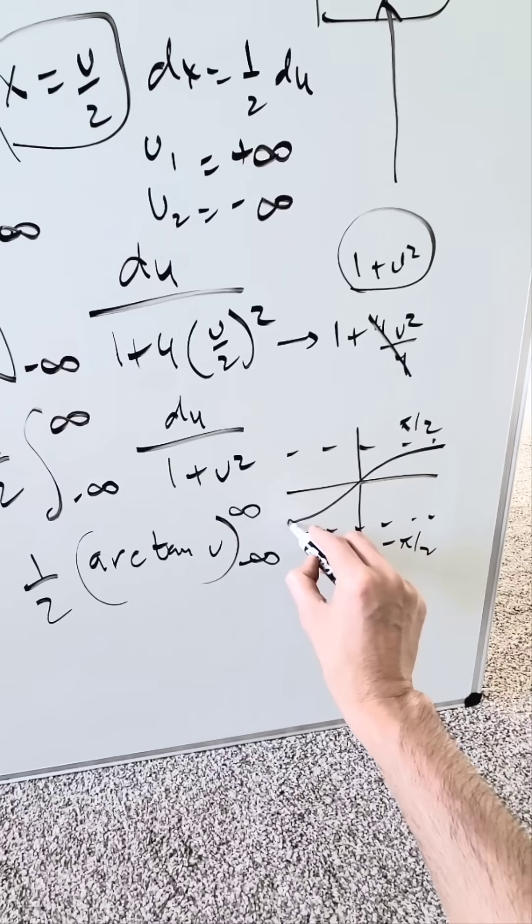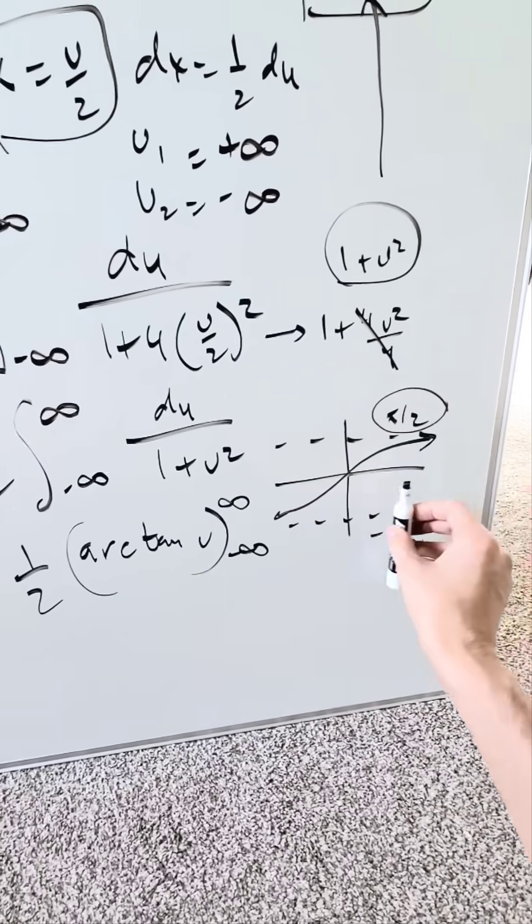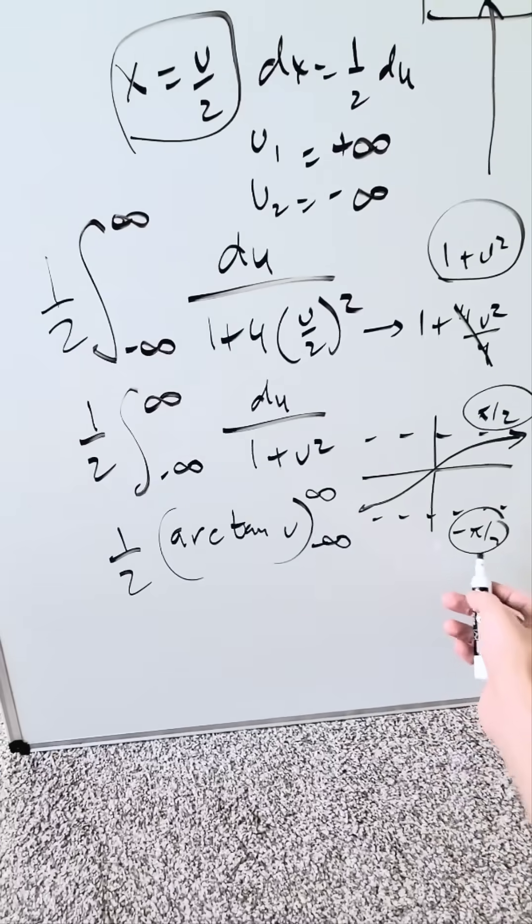Your function looks like this. As x approaches infinity, you're looking at the upper asymptote. As x approaches minus infinity, you're looking at the lower asymptote, which is minus pi over 2.